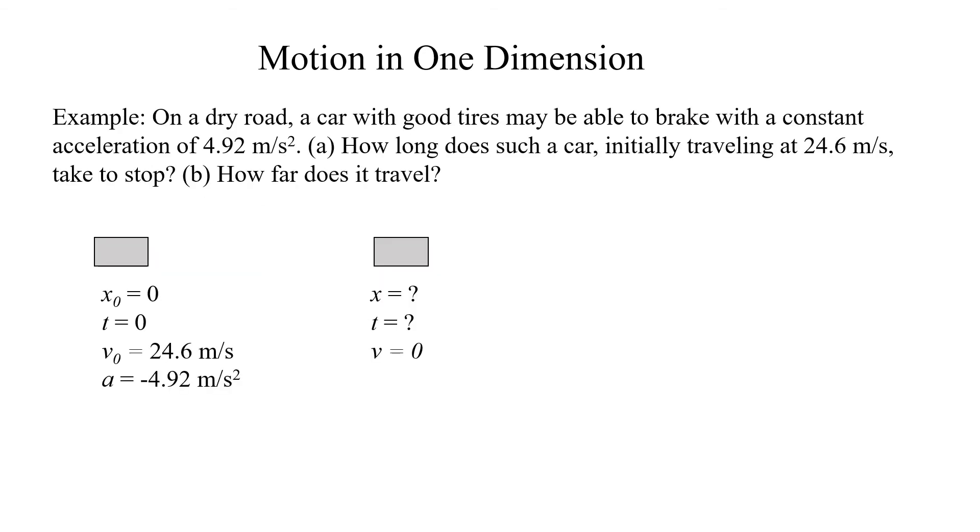On a dry road, a car with good tires may be able to brake with a constant acceleration of 4.92 meters per second squared. How long does it take such a car, initially traveling at 24.6 meters per second to stop? In part B, how far does it travel?